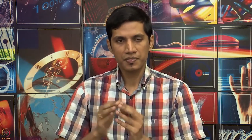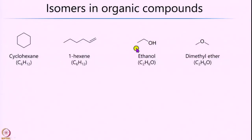I am sure you would have come across the idea of isomers in organic compounds or in other branches of chemistry. For example, cyclohexene and 1-hexene both have the same empirical formula C6H12, but the way in which the atoms are connected in 3-dimensional space is totally different between these two organic molecules. Another simple example is ethanol, CH3CH2OH, which has the same empirical formula as dimethyl ether, C2H6O.